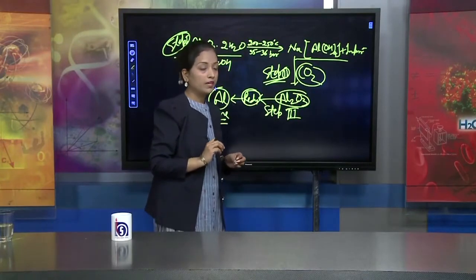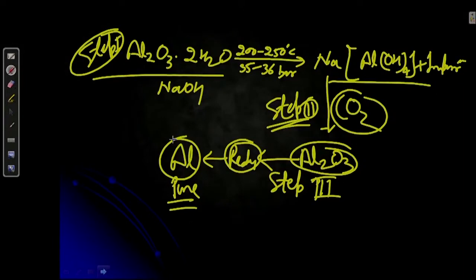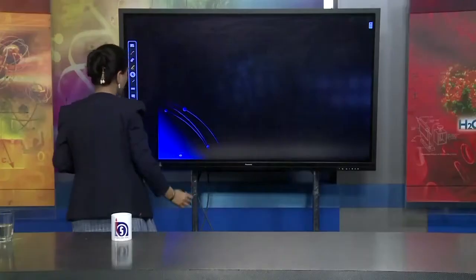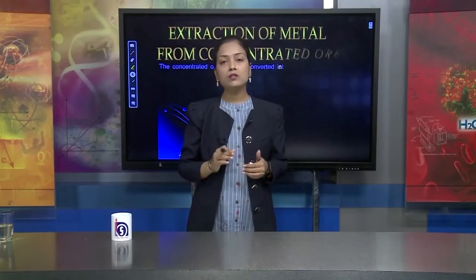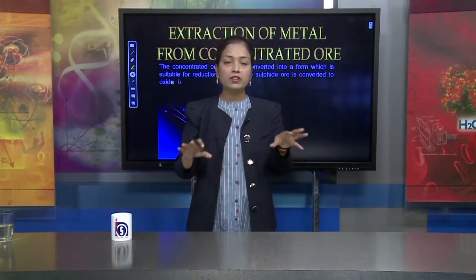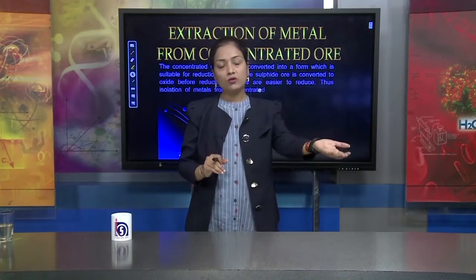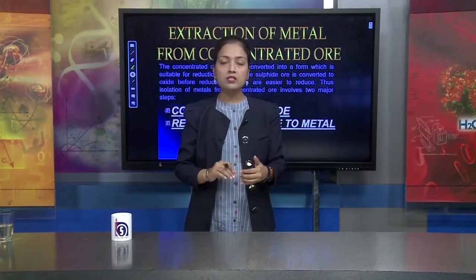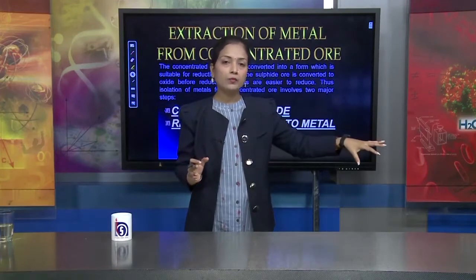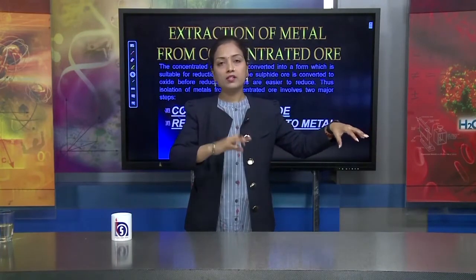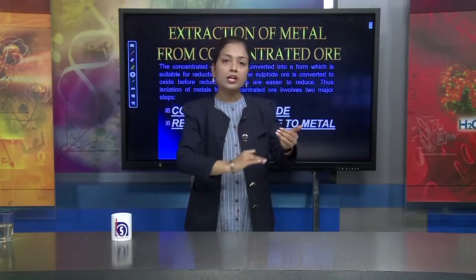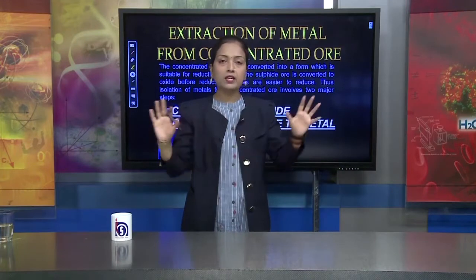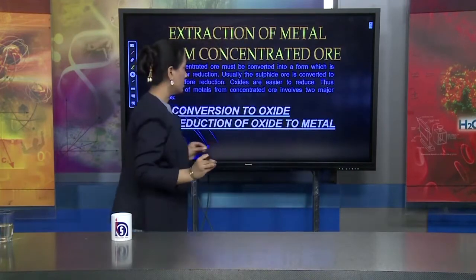Sometimes the reaction for the leaching process of alumina is asked. The ore is reacted with sodium hydroxide, giving sodium salt; impurities which are not soluble in sodium hydroxide solution are separated by filtration. The sodium salt is then reacted with excess CO₂ to get alumina (Al₂O₃). Reduction of alumina removes the oxygen, leaving pure aluminium metal.